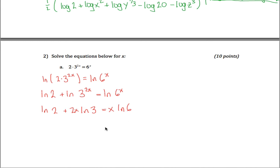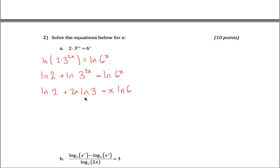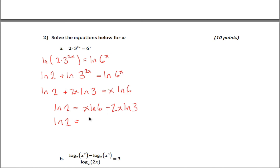This is actually a linear equation — x times some number, x times some number, and then some number. To solve it, get all x's on one side and all other terms on the other side. Subtracting gives: natural log of two equals x times the natural log of six minus two x times the natural log of three. Factoring x out: natural log of two equals x times the quantity natural log of six minus two times natural log of three. Dividing gives x equals natural log of two divided by the quantity natural log of six minus two times natural log of three.